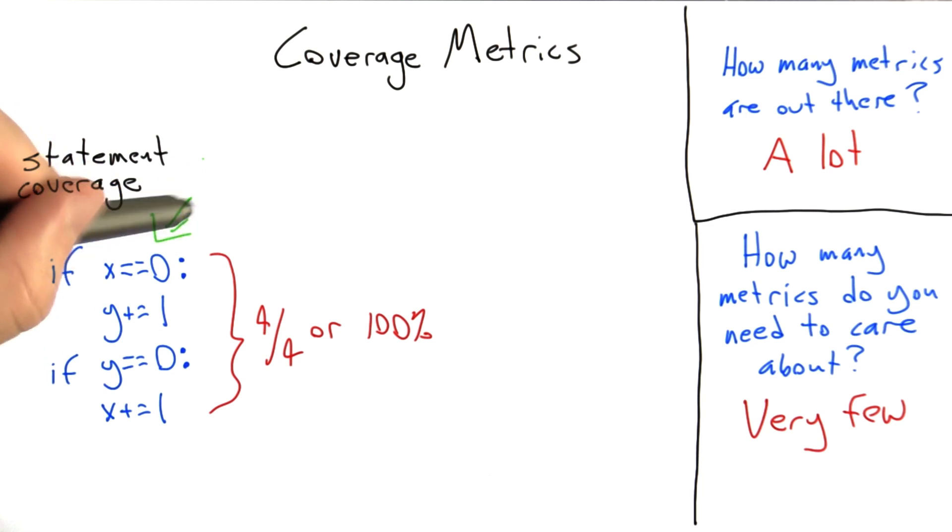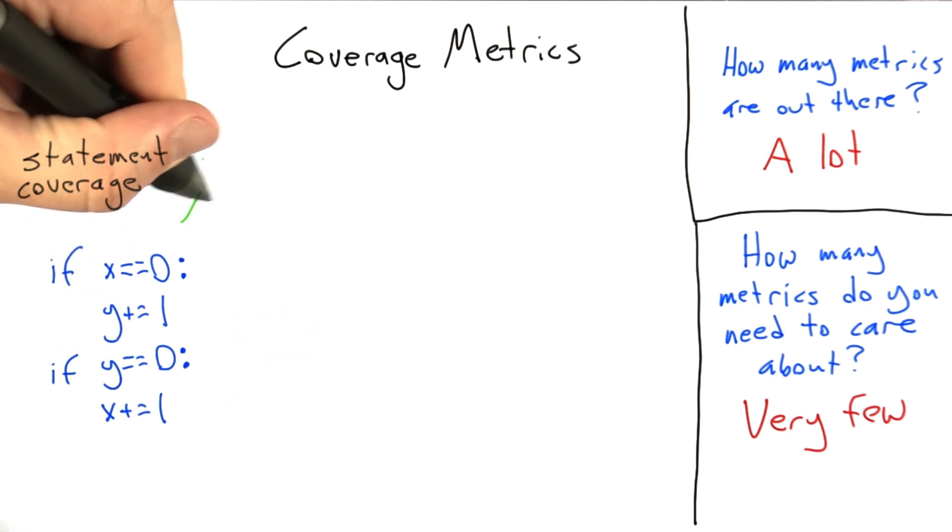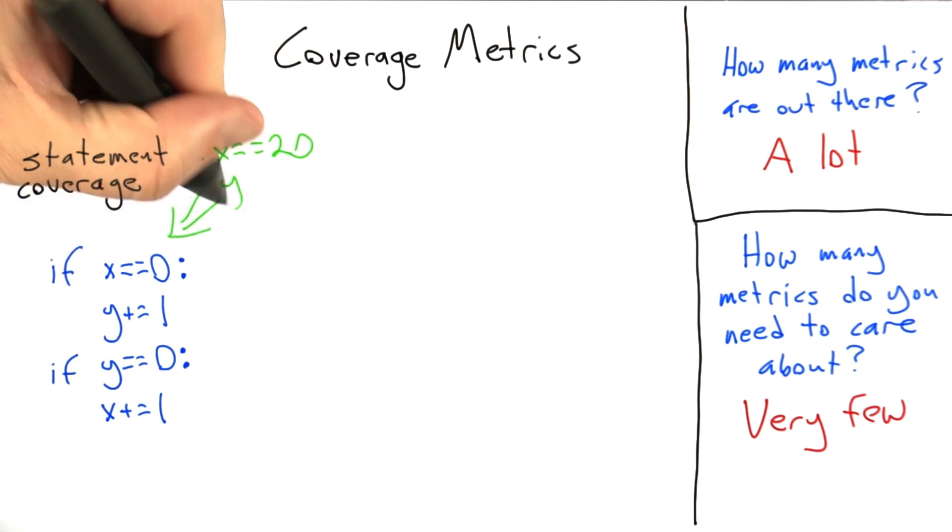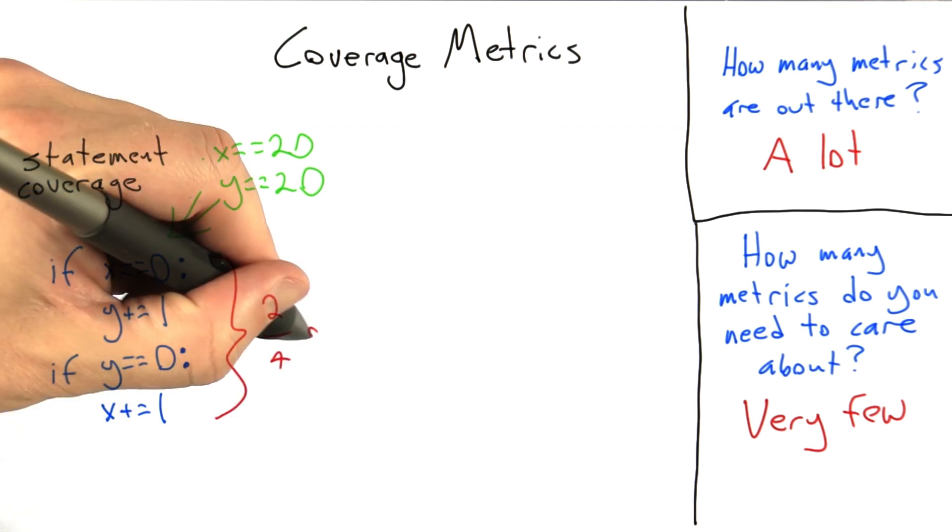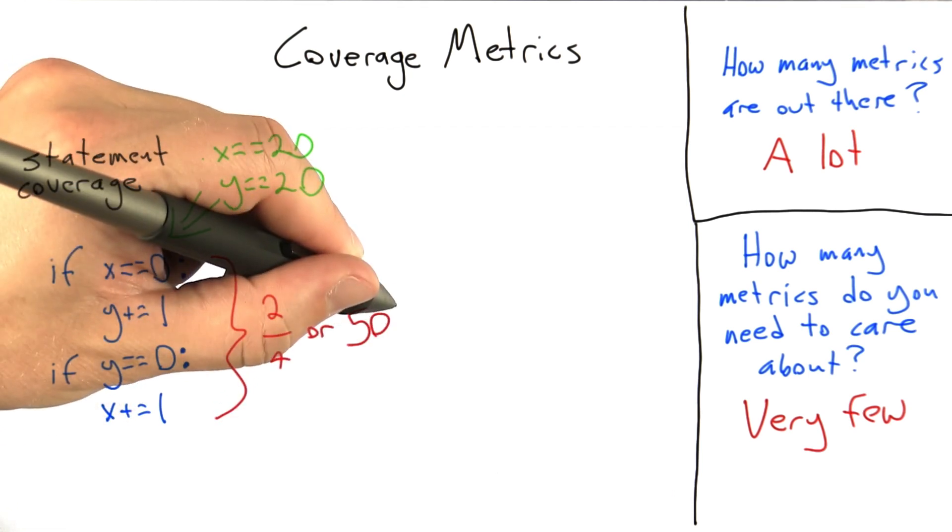Just really quickly, let's look at calling it with different values. So now if we call this code with x equals 20 and y equals 20, both tests will fail, and so we'll end up executing both of the tests but neither of the then branches of the if tests. And so we'll end up with a code coverage of 2 out of 4 statements, or 50%.